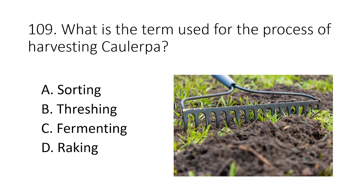Question 109. What is the term used for the process of harvesting Caulerpa? A. Sorting B. Threshing C. Fermenting D. Raking. The answer is D. Raking.